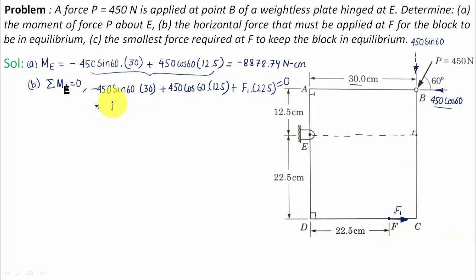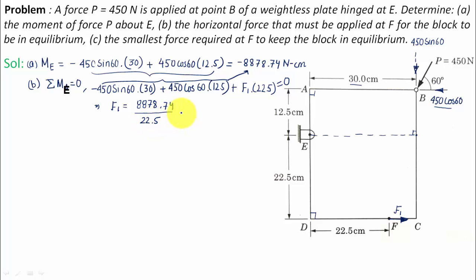From this equation, F1 equals 8878.74 divided by 22.5, which gives F1 equal to 394.6 Newtons. So if you apply 394.6 Newtons in that horizontal direction, there will be no net turning moment and the rectangular plate will remain in equilibrium.